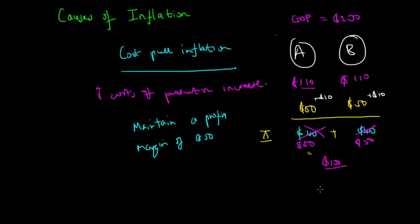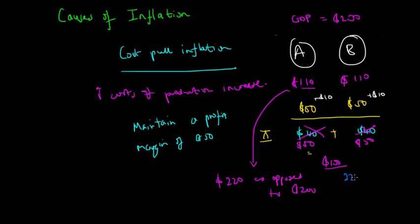With both products now priced at $110 each, the total is $220 compared to the original $200. Calculating 220 divided by 200 equals 110%, so country alpha has experienced a 10% rise in inflation. This illustrates cost-push inflation, where rising production costs are passed on to consumers, pushing the general price level upward.